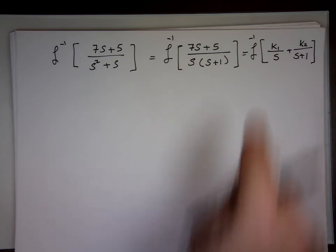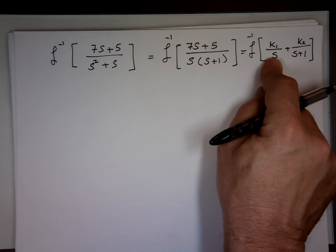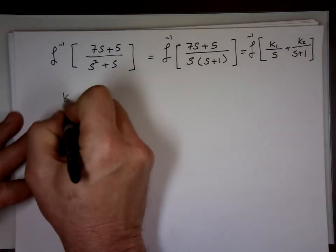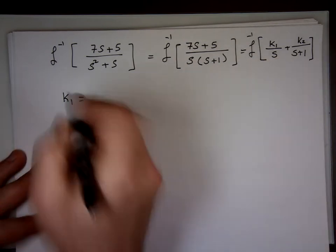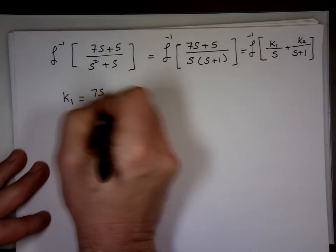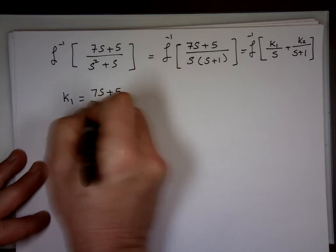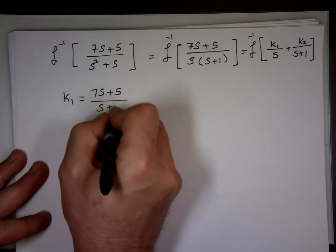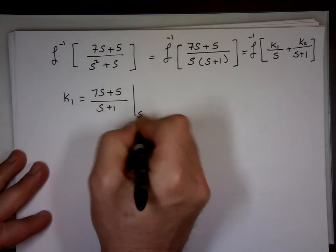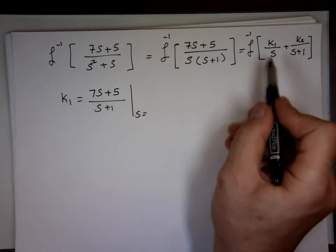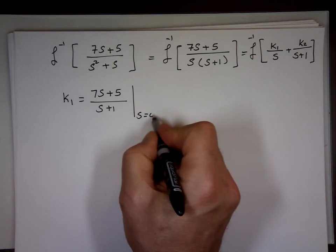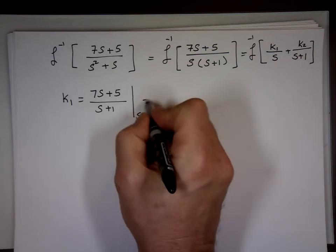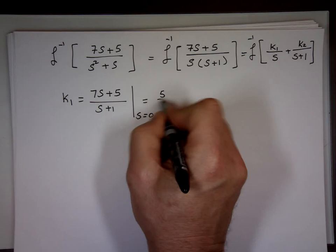Notice K1 is sitting over S. So to find K1, we go to this expression. It's sitting over S. Take the S out of it. So it's (7S+5) over (S+1) when S equals what? What value makes the bottom 0 here? Which is 0. If S is 0, you have 5 over 1, which is 5.